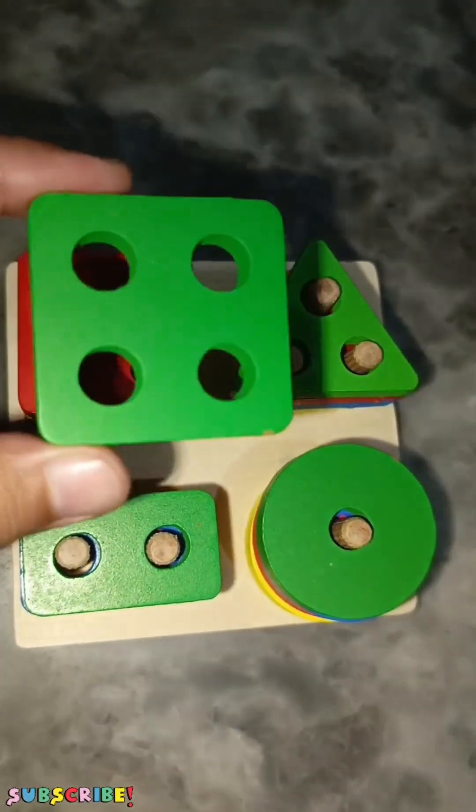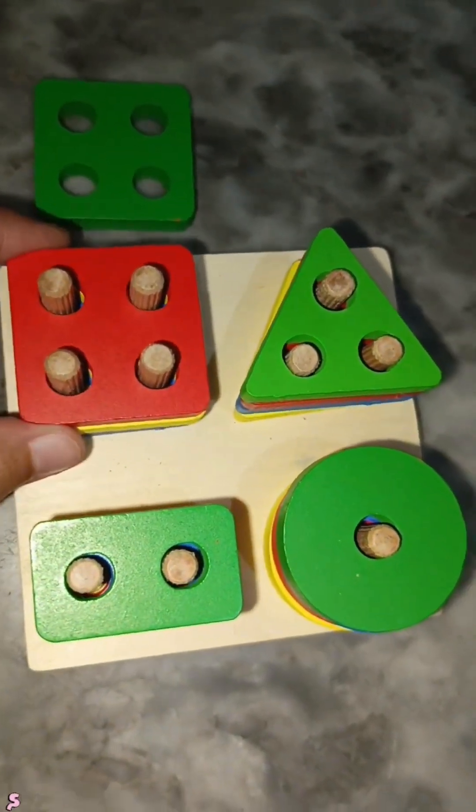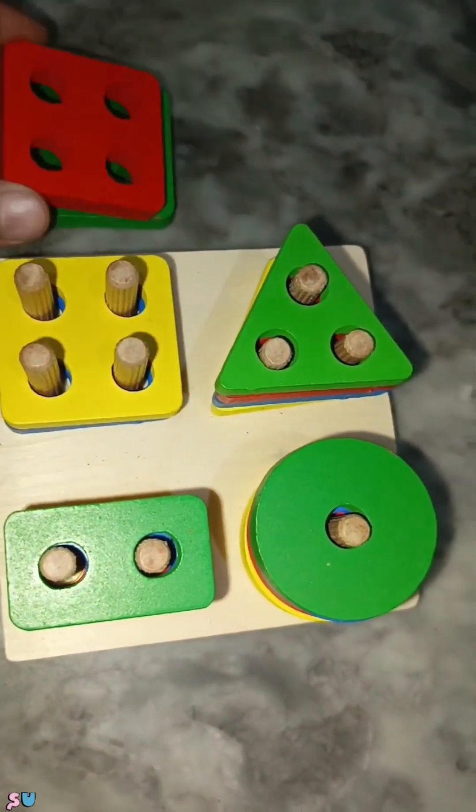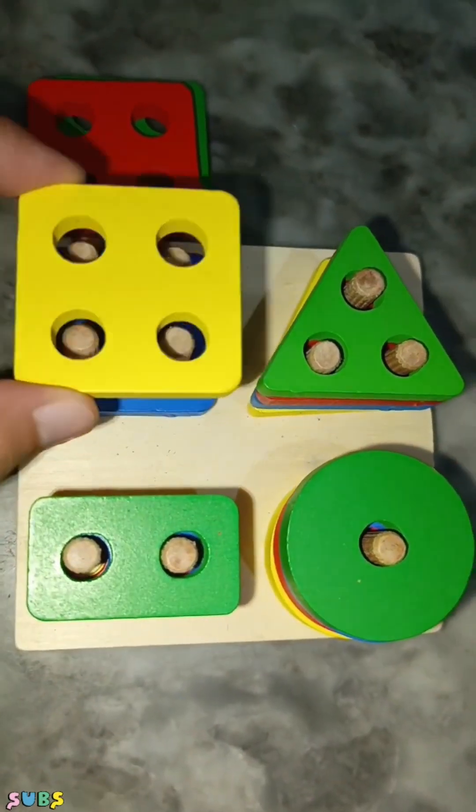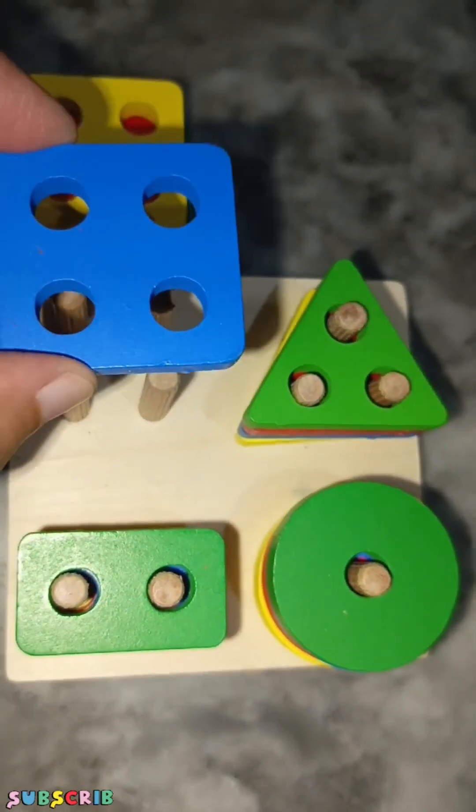So, hamaare paas hai square. This is green square. Here hai hamaare paas red square. Yellow square. Blue square.